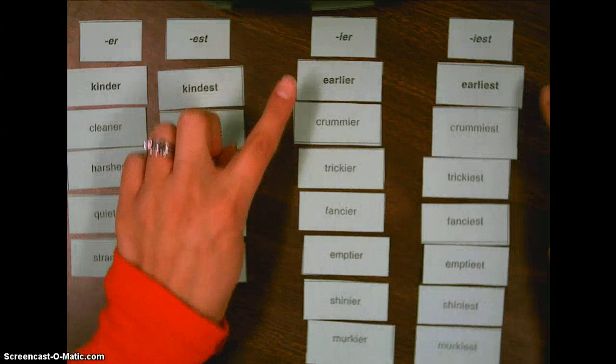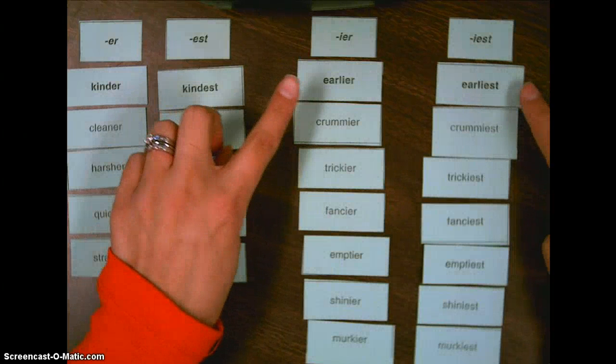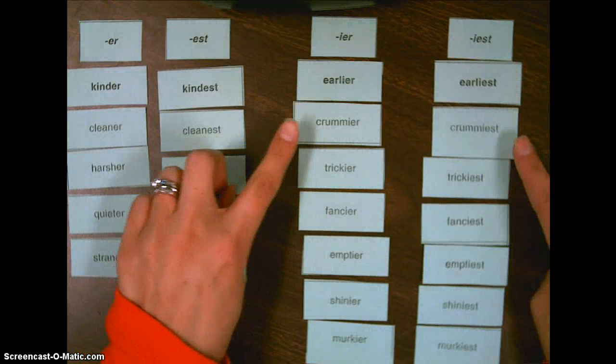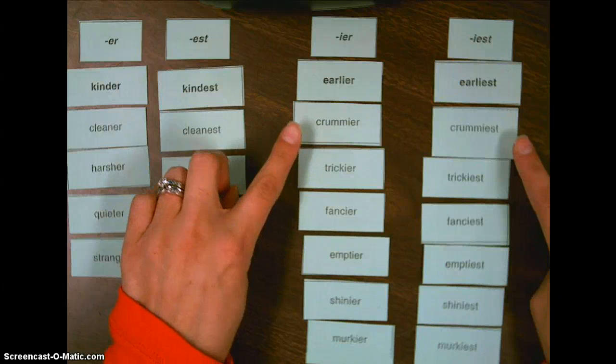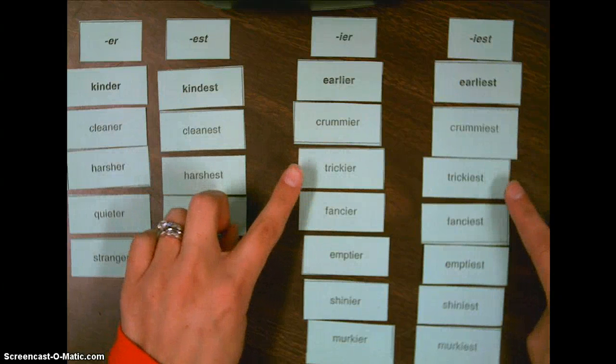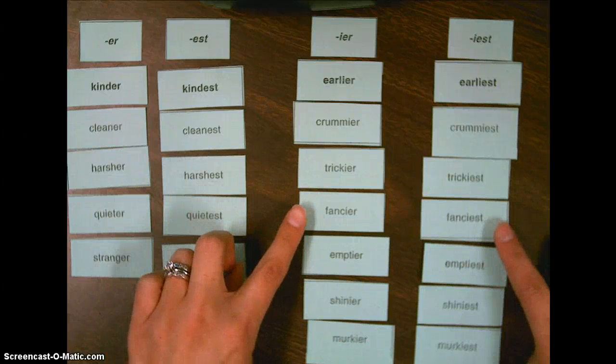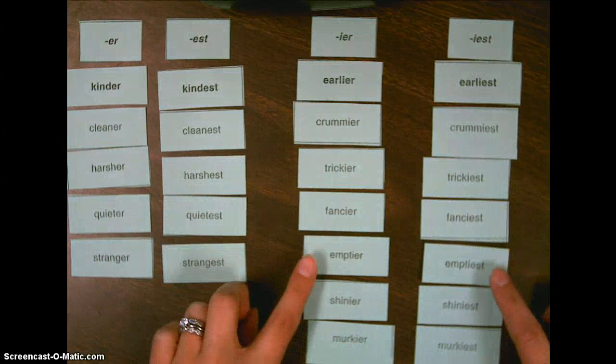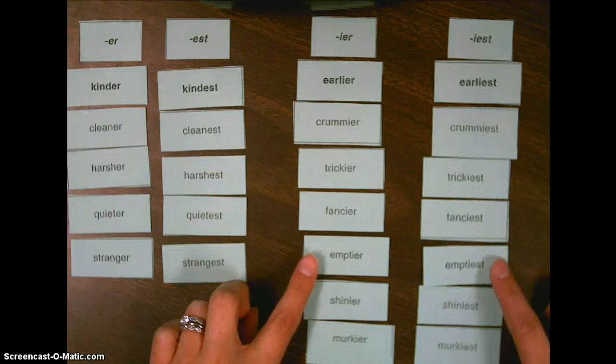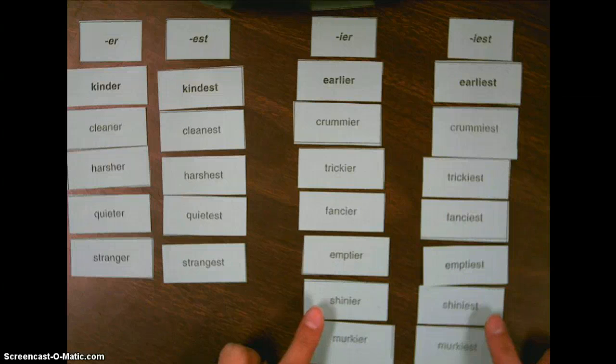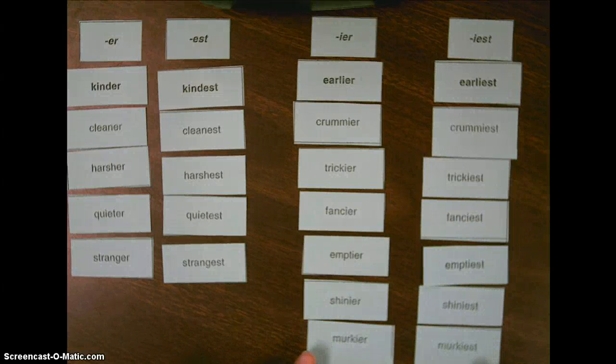Now, the words where the spelling of the base word does change are these. Check to see if you have these. Earlier and earliest, crummier and crummiest, trickier and trickiest, fancier and fanciest, emptier and emptiest, shinier and shiniest, and murkier and murkiest.